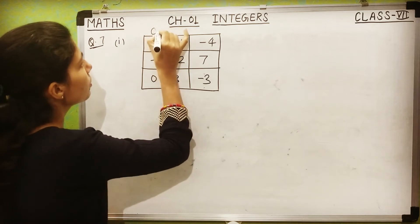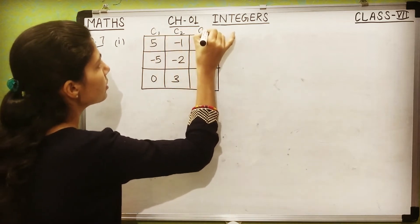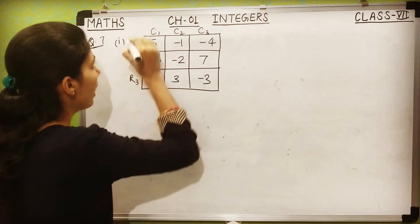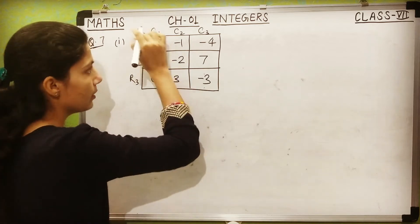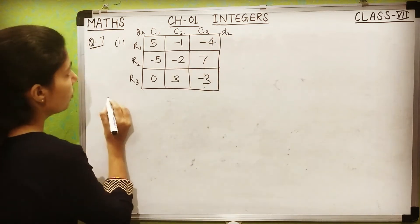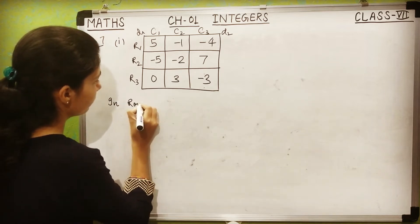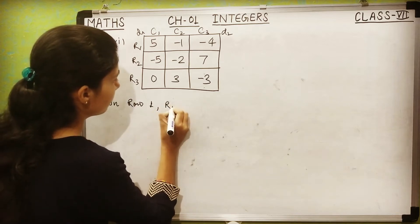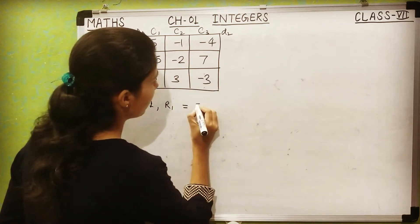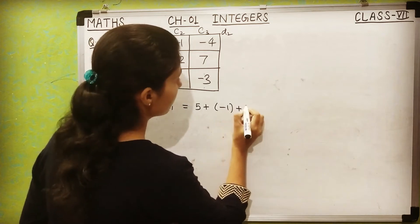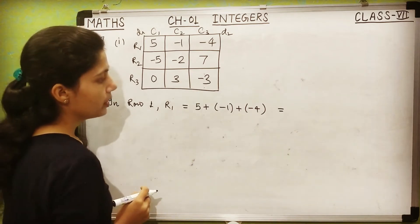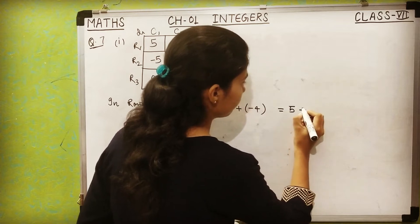Let's label column 1, column 2, column 3, and row 1, row 2, row 3, diagonal 1 and diagonal 2. In row 1 (R1), the sum of the three integers is 5 + (−1) + (−4). So 5 written as is. Then minus 1 and minus 4 — both are negative, so add them: 1 + 4 = 5, with negative sign giving minus 5. Now 5 minus 5 = 0. So the sum of the first row is 0.